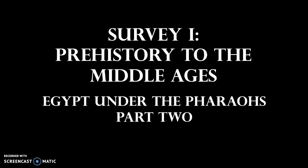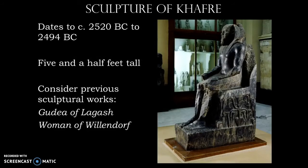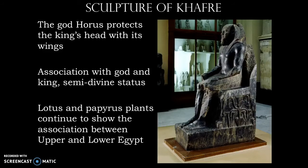Welcome back — this is part two of Ancient Egypt. We left off talking about some of the architectural features of the Old Kingdom, and now we're going to take a look at sculpture, paying particular attention to the sculpture of Khafre. It is massive compared to previous sculptures we've seen, such as Gudea of Lagash or the Woman of Willendorf. The sculpture is five and a half feet tall — over life size. You'll notice the god Horus behind the king's head with outstretched wings, protecting the pharaoh. This lends itself to the association between the god and the king — a lineage is present here.